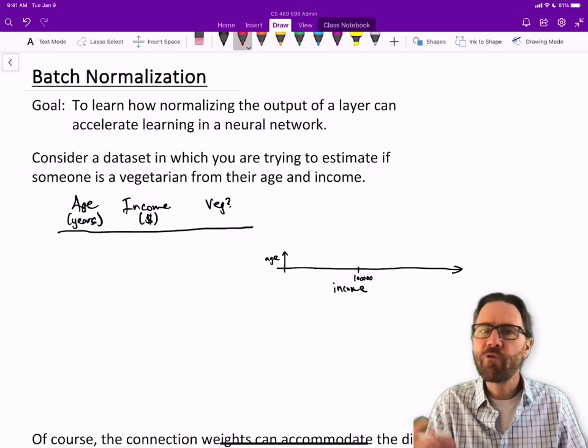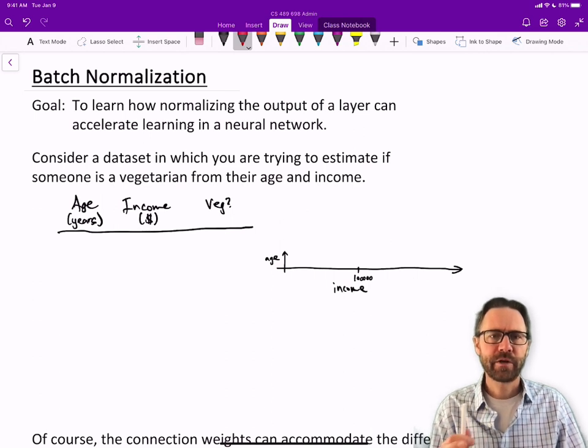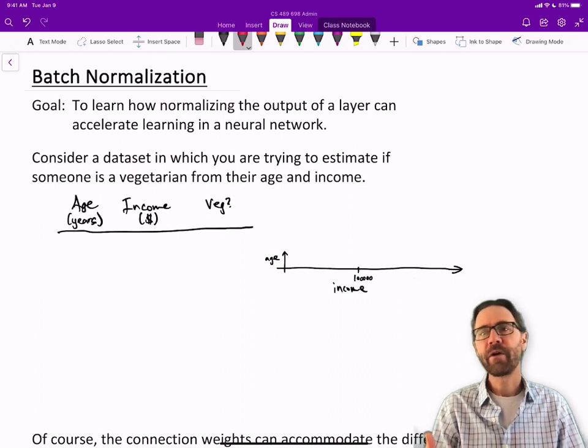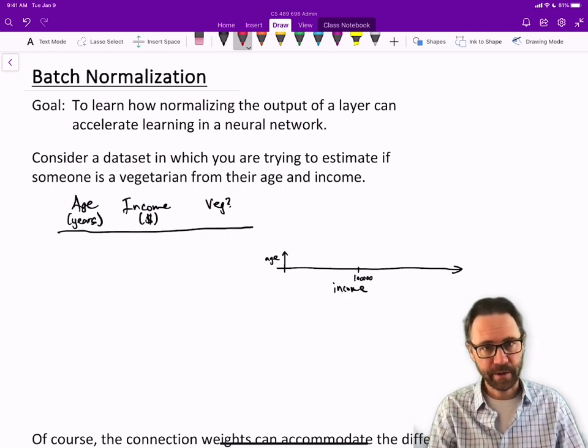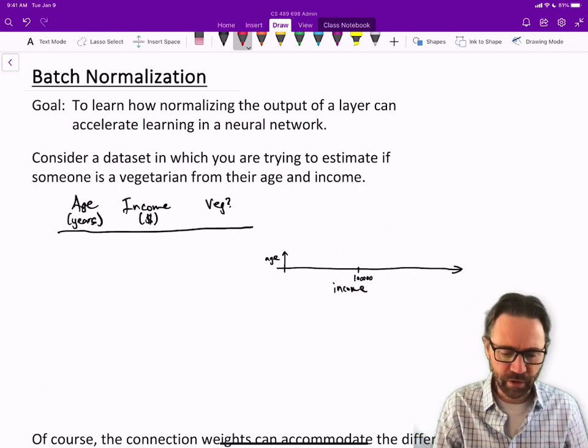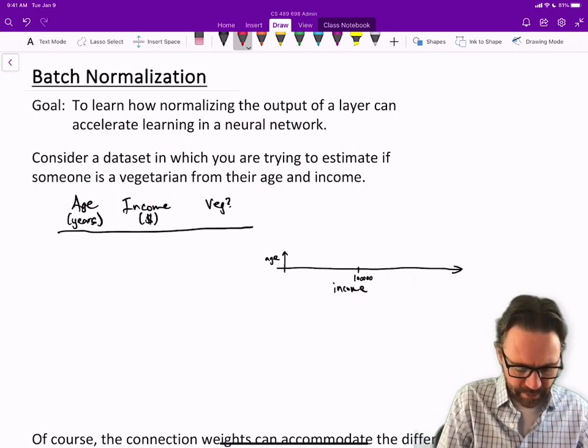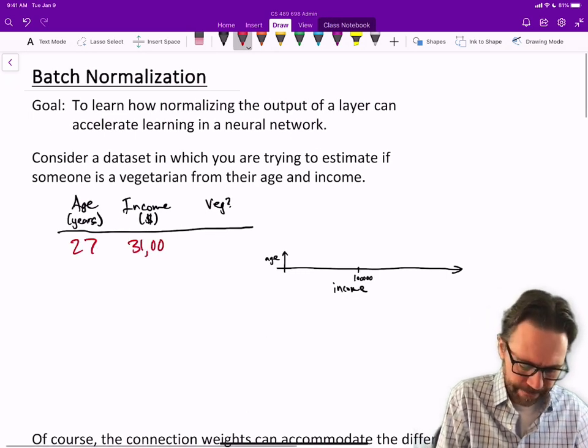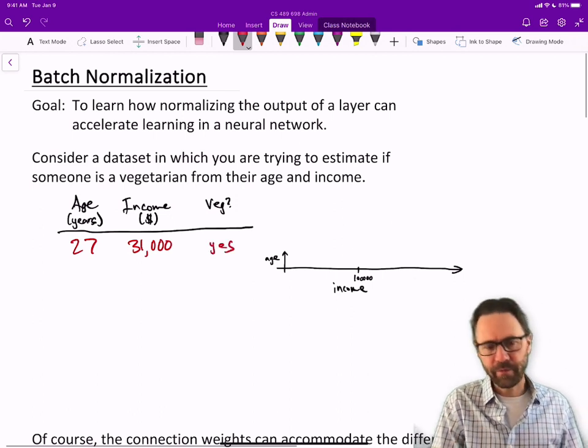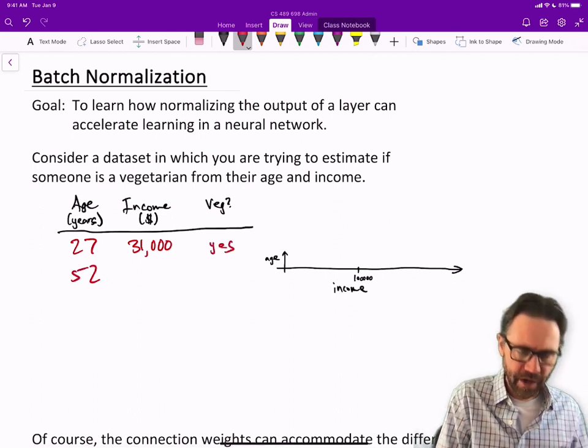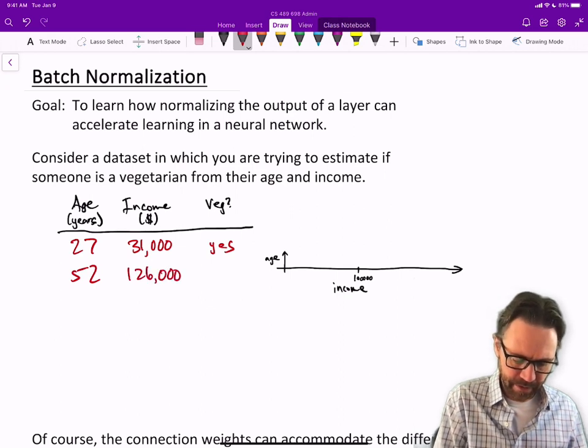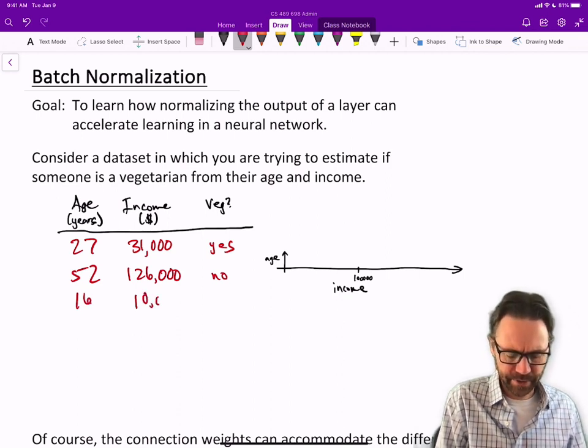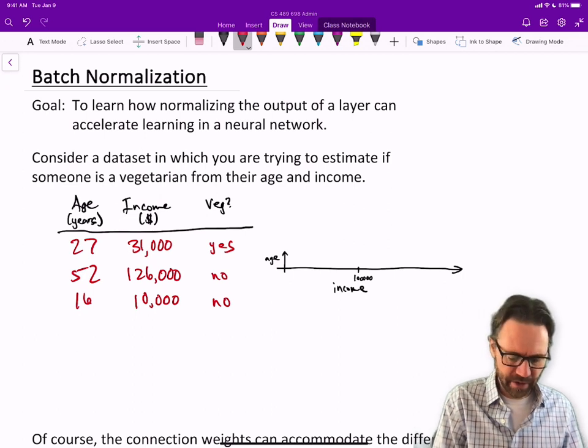To understand what I mean by normalizing, let's look at an example. Consider a dataset in which you're trying to estimate if someone is a vegetarian from their age and income. So let's say we have someone who's 27 years old with an income of $31,000 and they happen to be a vegetarian. Then someone who's 52 with an income of $126,000 per year who's not vegetarian. Another person who's 16 may make $10,000 per year and they're not vegetarian, and so on.